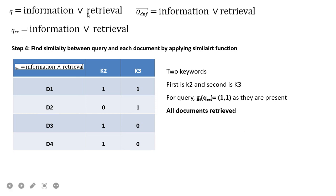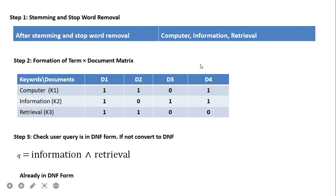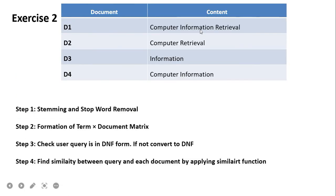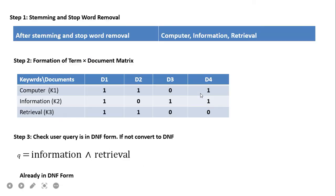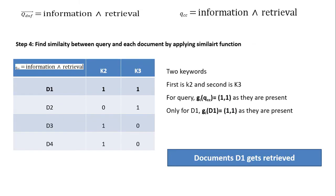The next query is 'information OR retrieval.' Its DNF form is 'information OR retrieval,' and the qcc is information versus retrieval. The gi(qcc) for the query is (1,1) since both information and retrieval are present as query terms. With the OR operator, all four documents qualify because in every document either information or retrieval is present. All documents are therefore retrieved.